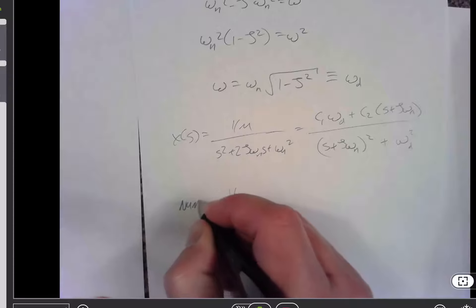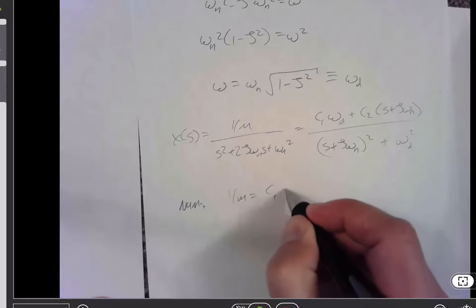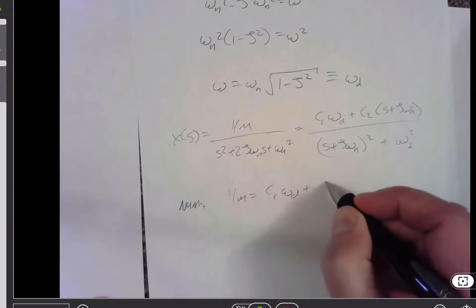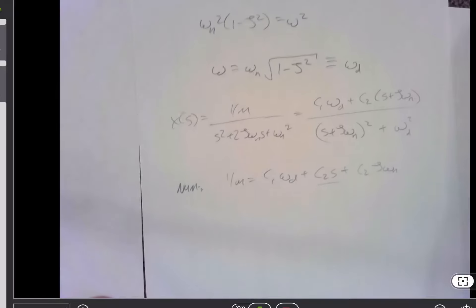So from my numerator, I get that 1 over m is equal to c1 omega d plus c2 s plus c2 zeta omega n. Well, this is the only s term, and so c2.